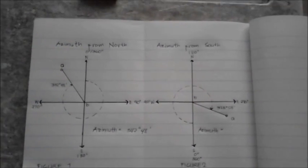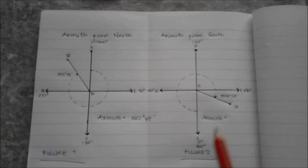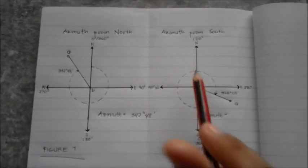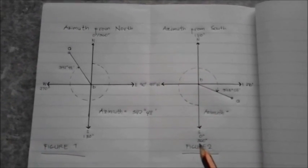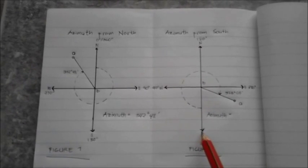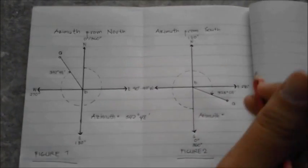In this figure, we can see that the angle is measured from the south branch of the meridian. The azimuth from south of line VA is 325 degrees and 5 minutes.